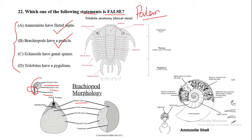Option C: echinoids have genal spines. Let's examine what a genal spine is and which organism actually has one.